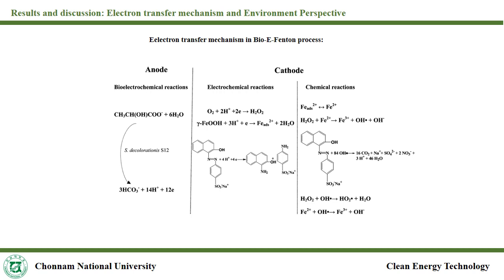The diagram shows the electron transfer mechanism in the bioelectron process and electrochemical activity in the chambers. Protons and electrons produced in the anode chamber move to the cathode chamber to reduce oxygen to hydrogen peroxide. Ferrous ions are also produced in the cathode. Hydrogen peroxide and ferrous ions react to produce hydroxyl radicals that consequently degrade orange 2.